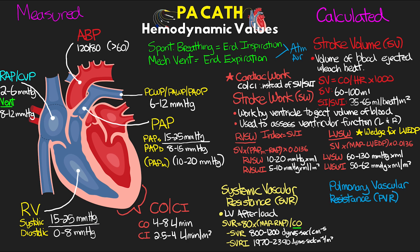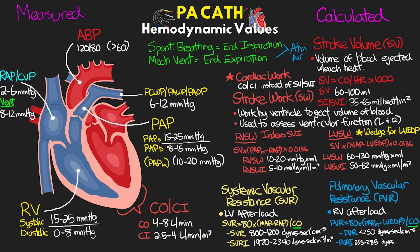Next we have pulmonary vascular resistance, or PVR — the vascular resistance in the pulmonary artery, which is the afterload the RV has to contract against. PVR equals 80 times the difference between mean pulmonary artery pressure and left ventricular end-diastolic pressure — again, using the wedge pressure here — divided by cardiac output. We can index this with body surface area by dividing by cardiac index instead. Normal PVR is less than 250, while normal PVRI is 255 to 285. There are many other hemodynamic and cardiac values that can be calculated, but these are the most common ones we often see and use.